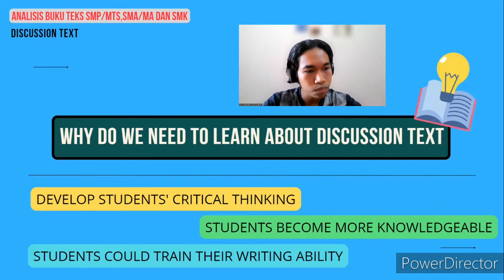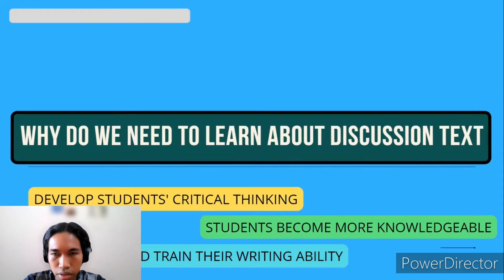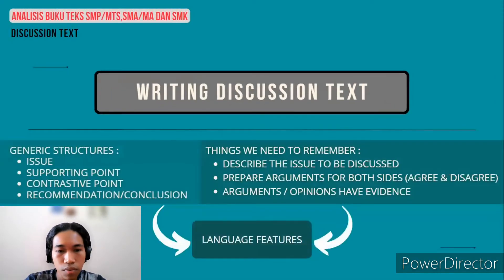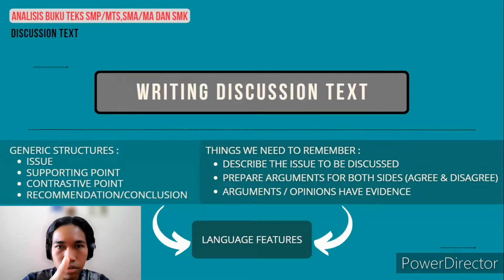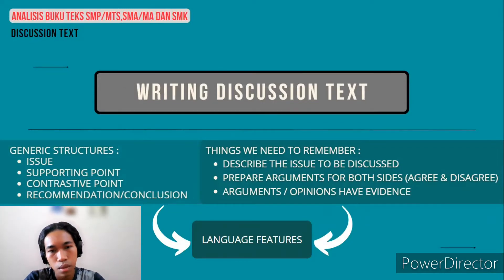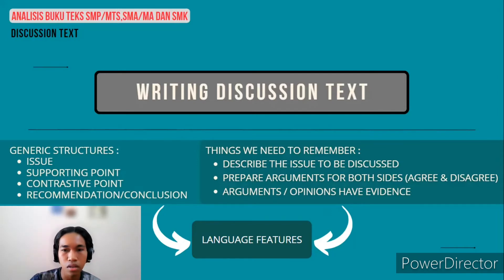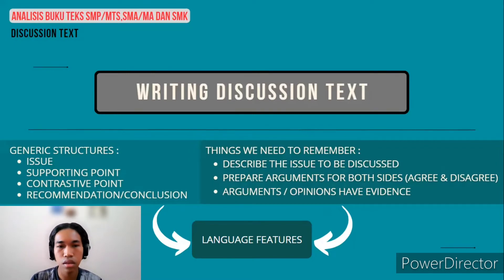Now let's jump to writing discussion text — how to write a discussion text. First of all, you need to know how to construct discussion text using its generic structures. The first generic structure is issue. The issue is a statement that shows a preview of the main arguments — it contains a preview about something that you want to discuss in your text.